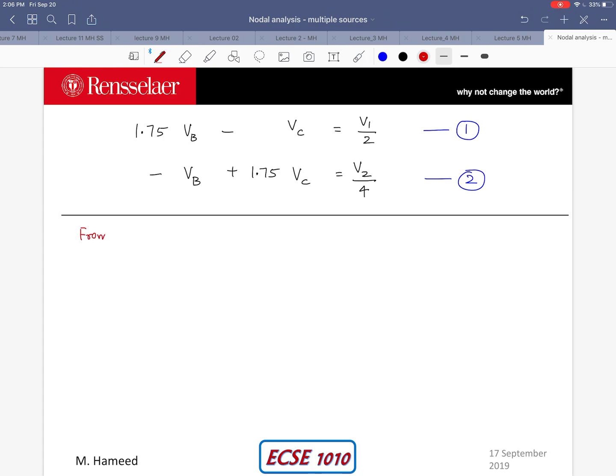So from equation 1, I can find VC which is simply going to be 1.75 VB minus V1 divided by 2, and I can substitute this in the second equation, which is negative VB plus 1.75 VC. So in the place of VC I write 1.75 VB minus V1 divided by 2, equals V2 divided by 4. So all of this is VC from the first step.